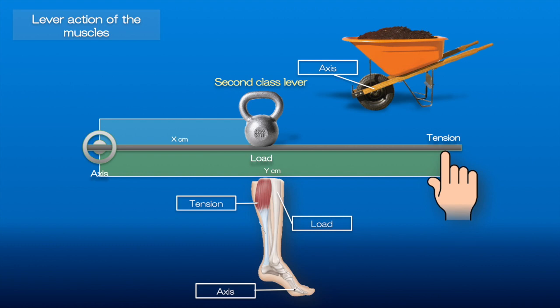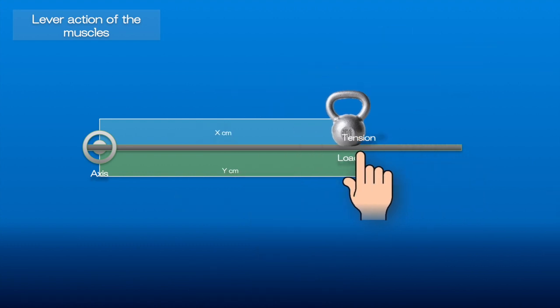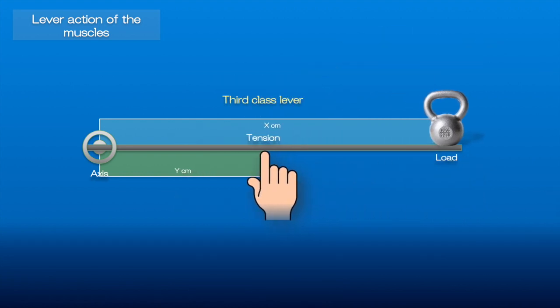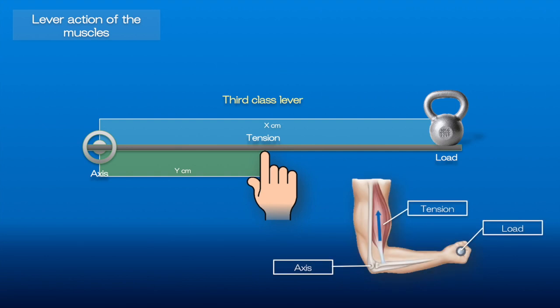Let's look at the third class lever. It is the most common lever in the human body, and the force is applied between the load and the axis. There are many third class lever examples. One of them is the elbow joint, and the force is the biceps muscle when the elbow is flexed.